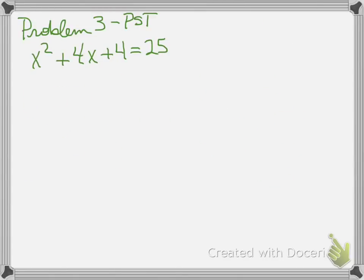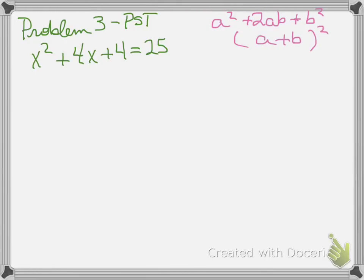All right, problem three: solving a perfect square trinomial equation. I've skipped over problem two — that's a word problem for the advanced classes, which we'll do on Wednesday. First, remember what a perfect square trinomial looks like: a squared plus 2ab plus b squared, which factors into (a + b) squared.